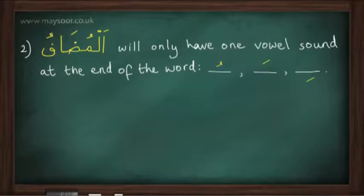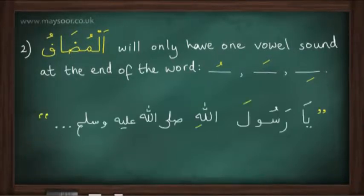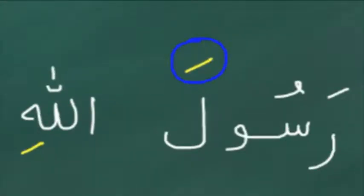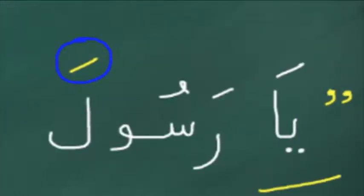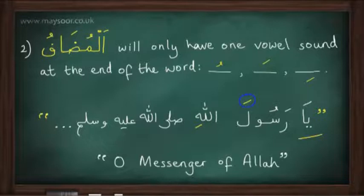The second important point is that al-mudaf — the possessed — will only have one vowel sound at the end of the word. It can be a dhamma, as we've seen in the previous example, a fatha, or a kasra. For example, many times we read and hear in a hadith 'ya Rasulallahi sallallahu alayhi wa sallam,' which means 'O messenger of Allah.' In this example the last vowel of al-mudaf has been changed from a dhamma to a fatha, because the ya of calling and addressing someone came in front of the mudaf. We will cover the ya of calling and addressing in more detail in a future episode.